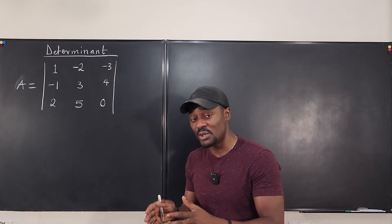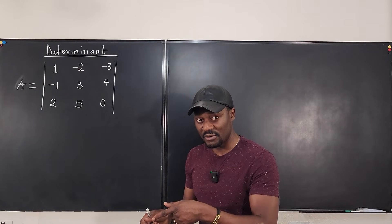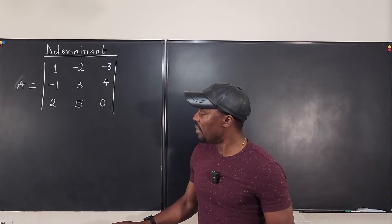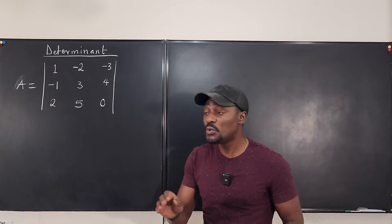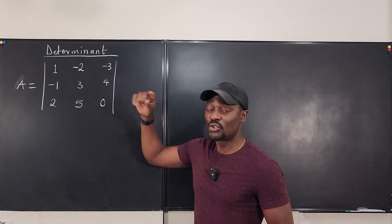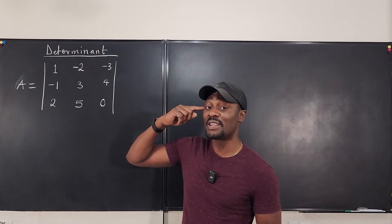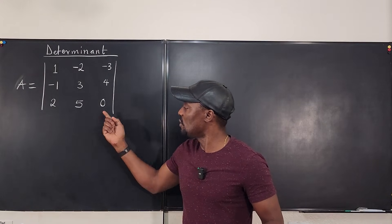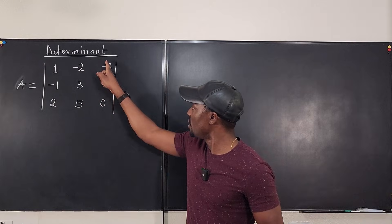To find the determinant of a 2x2 matrix, you multiply the major diagonal and then subtract the other diagonal from it. Now, how do we break a 3x3 down into smaller matrices? You have to choose a column or a row — ideally one that contains the most zeros, which makes computation easier.